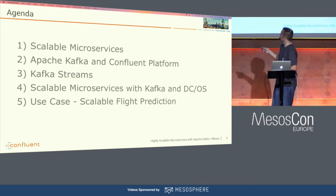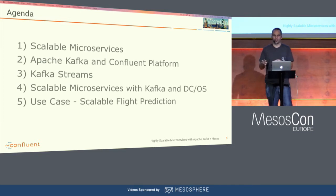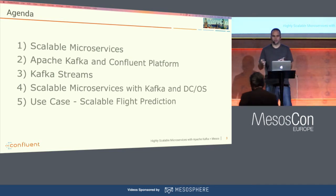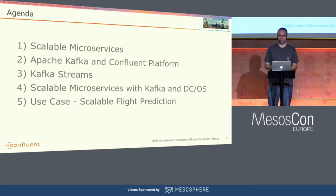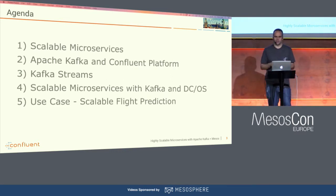Here you see the agenda for the next 30 or 35 minutes. First, a short explanation about what I mean with scalable microservices and the motivation for this talk. I'll also talk about Apache Kafka and the Confluent platform, then go into more details about Kafka Streams, how it differs from other stream processing engines like Spark Streaming, Flink, Storm, and then how these work together with Mesos and DCOS. Finally, a live demo.